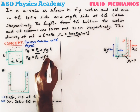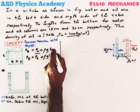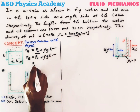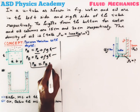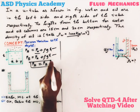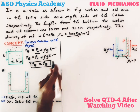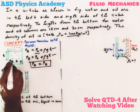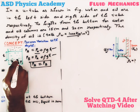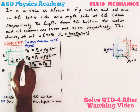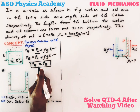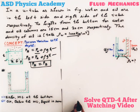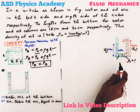Pressure at point B is also given by P_a plus ρgh. Observing both expressions, we can tell that P_a equals P_b. This is called Pascal's Law. According to Pascal's Law, if two points are present at the same level inside the liquid, then the pressure at both these points will be the same.